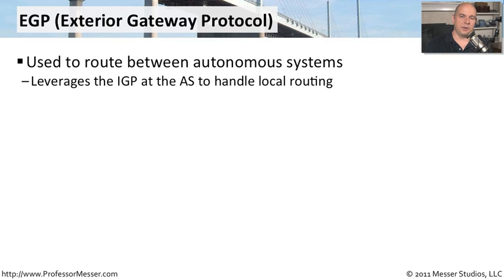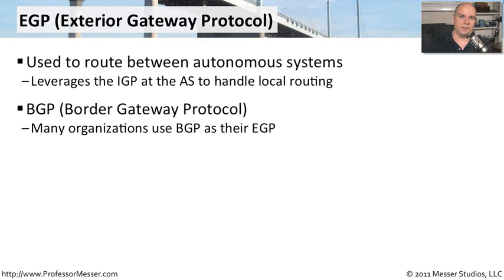If an interior gateway protocol is used to route within your own autonomous system, then an exterior gateway protocol is used to route information between autonomous systems. BGP is the most common example, and it's what you'll find many different organizations using when they need to connect their autonomous system to another. BGP is almost always the standard when communicating out on the internet and is used in many, many different locations.